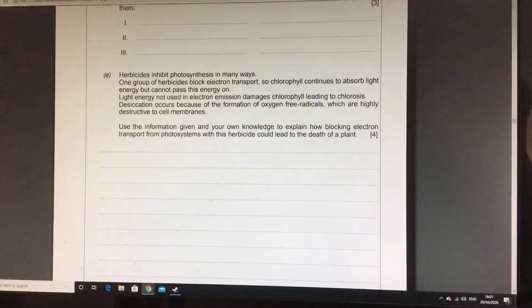How is blocking that electron transport chain leading to the death of the plant ultimately? So if light cannot be used, the photosystems no longer function. If light's not used, that means we don't have a light dependent stage, which means we will not have ATP, we will not have NADPH,